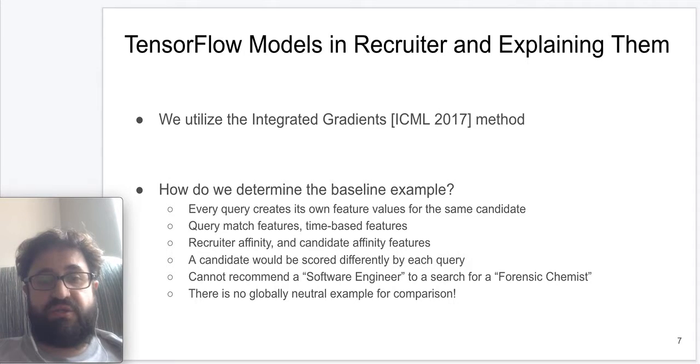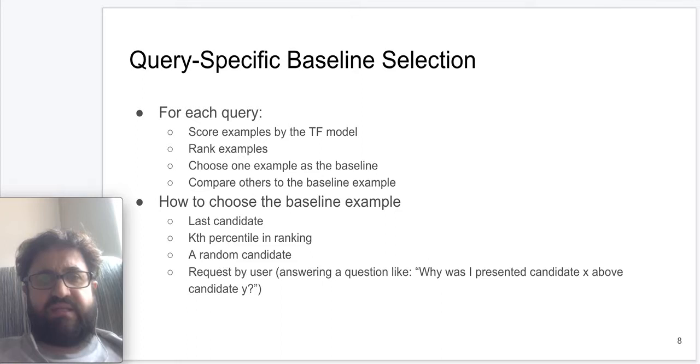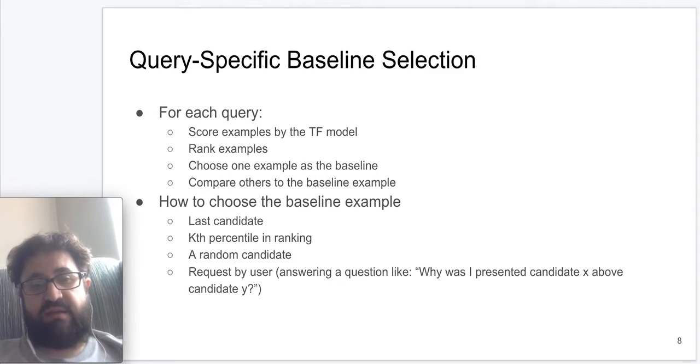Therefore, there is no globally neutral example for comparison, which is required by the integrated gradients method. This also means that we need to choose a different baseline example for each query after ranking and compare it to the other ranked candidates to this baseline in a query-by-query manner. For example, how we choose this baseline could be in many ways, but it could be the last ranked candidate or a random candidate. It could also be a request from the user of the system in the form of a question such as, why was candidate x ranked above candidate y in my recommendations.